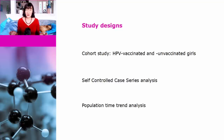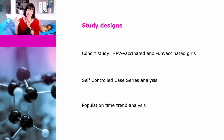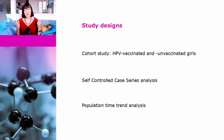The first thing they did was a cohort study where they compared the rate of events in 314,017 girls who had been vaccinated with a matched cohort who hadn't been vaccinated. The next thing they did was a self-controlled case series analysis, where they looked at 11,817 girls who had experienced one of the events of interest and compared the number of events that occurred before vaccination with the number that occurred after vaccination. Finally, they did a population time trend analysis, looking at general trends in events between 2000 and 2014, and whether the introduction of the vaccine in 2009 had any effect on the trend.